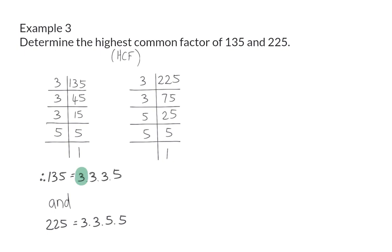Firstly, we can see that both values have one 3 as well as a second 3. The third 3 is only part of 135 and that means it is not common. Then, both of them have one 5, but the second 5 is only part of 225 and therefore not common.